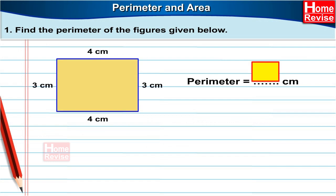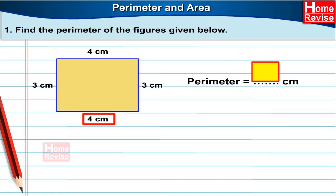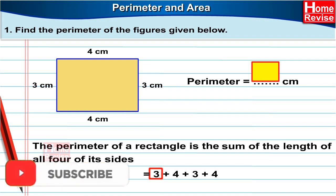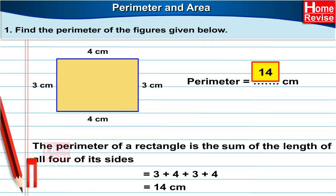Last is a rectangle. This rectangle has sides three centimetres, four centimetres, three centimetres and four centimetres. The perimeter is the sum of all the sides of the rectangle, which means three plus four plus three plus four, which is equal to fourteen centimetres.